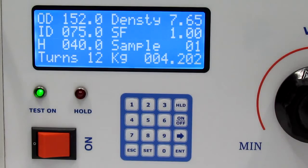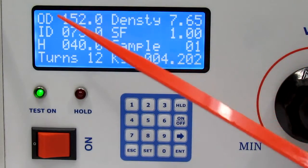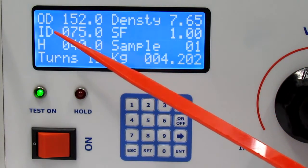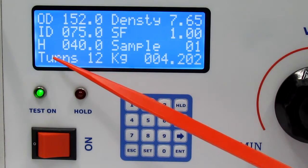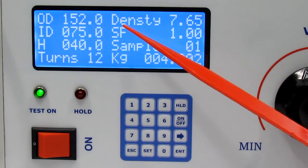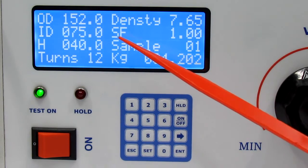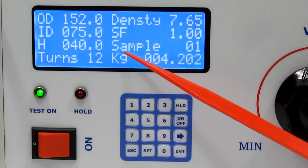Here you can see outer diameter OD, inner diameter ID, height H, turns density, stacking factor SF, average sample, and weight in kilogram.